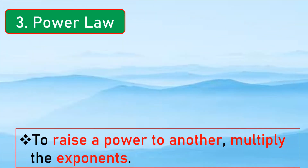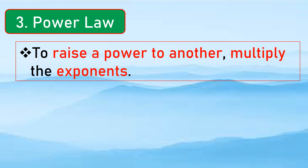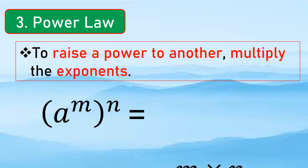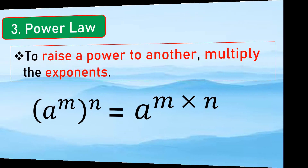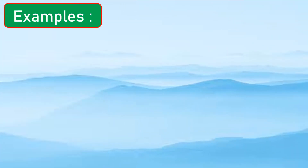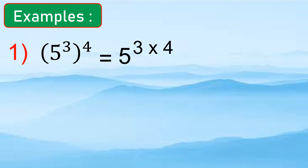Now let us have the power law. It states that to raise a power to another power, multiply the exponents. So if we have a to the m raised to n, we get a raised to m times n. For example, 5 to the 3rd raised to the 4th gives us 5 raised to 3 times 4, which equals 5 raised to 12.